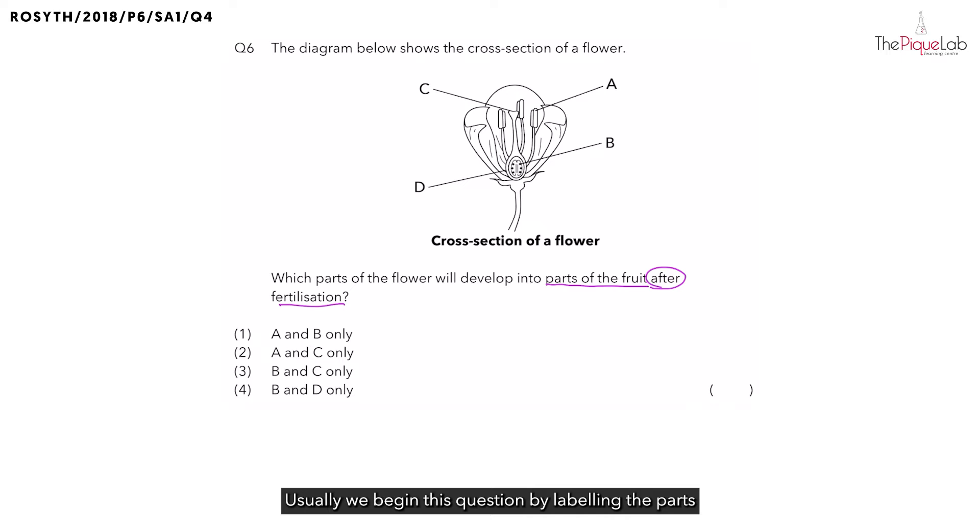Usually, we begin this question by labeling the parts given in the diagram. We'll start with part A. That is the anther. Part B is the ovule. Part C is the stigma. And part D is the ovary.